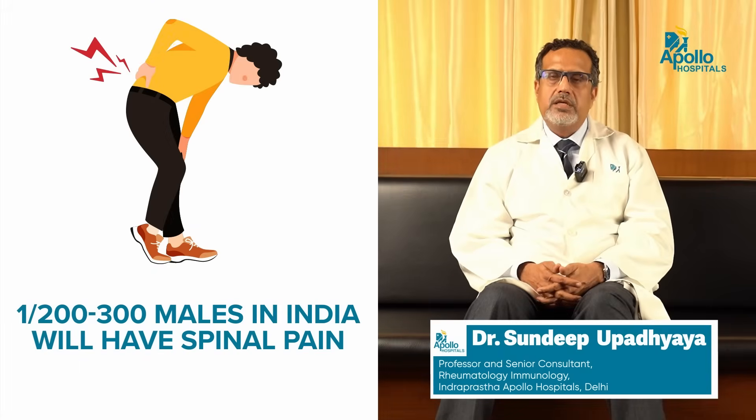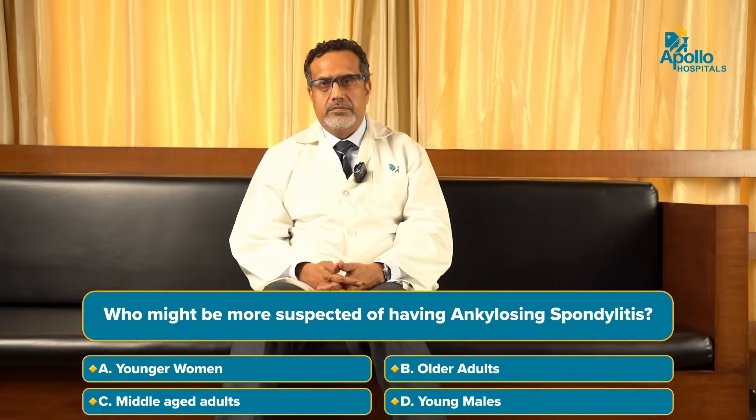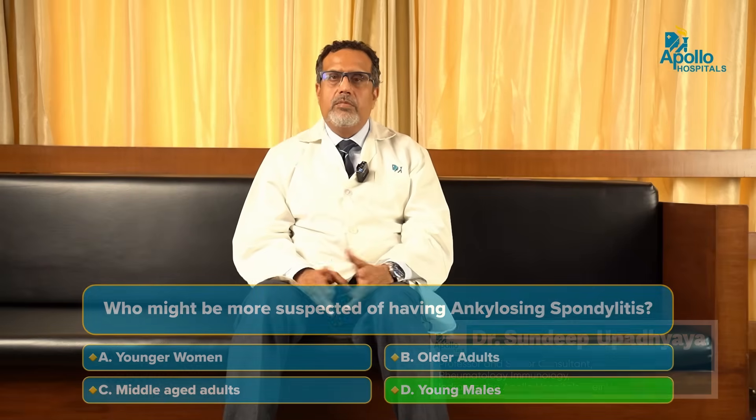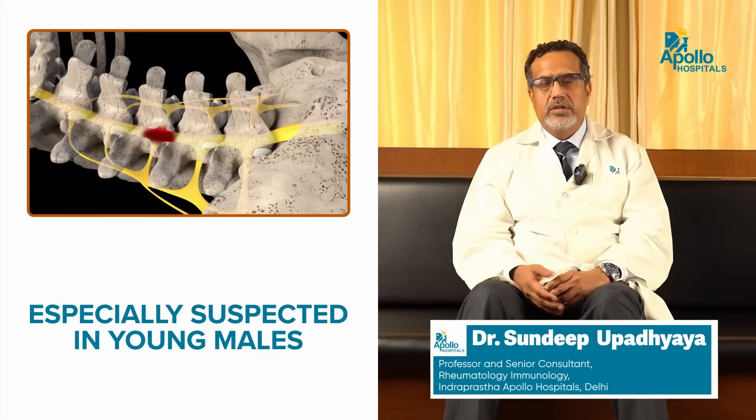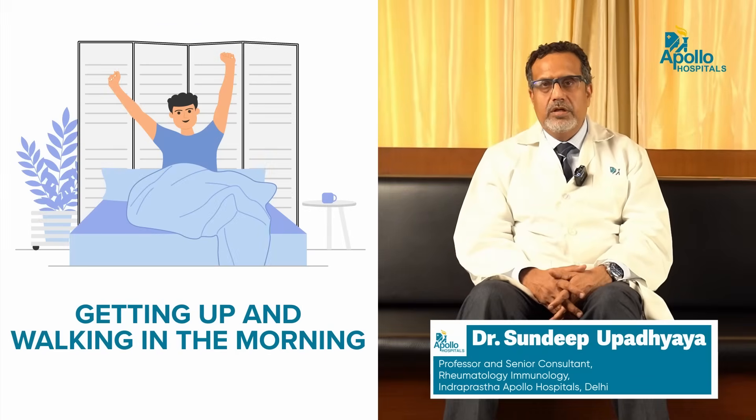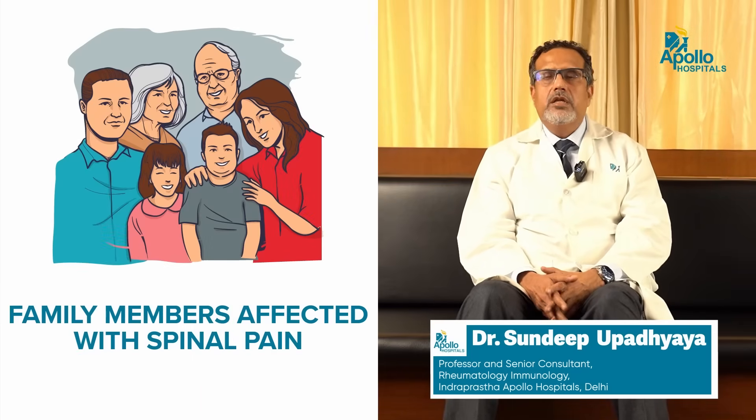About 1 in 200 or 1 in 300 male patients in our population will have spinal pain, pain in the buttock and the spine, and many of them are HLA-B27 positive. This is commonly suspected in the young male, especially if he presents with a history of buttock or spine pain, pain at the lower middle back, difficulty turning sides at night, getting up and walking in the morning, and a family history of spinal pain alongside a possible HLA-B27 positive blood report.